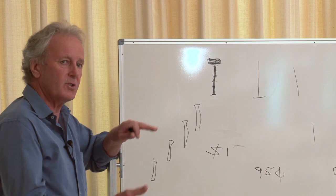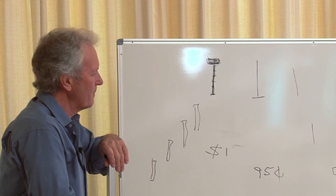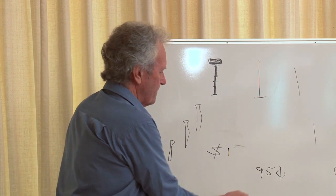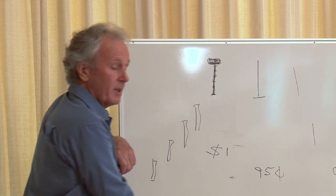What's the bid and ask? In other words, what are people prepared to pay? What are people prepared to sell? And they said, well, there's sellers in there at a dollar and there's buyers at 95 cents. And they said, who's the seller? And they said, we are.